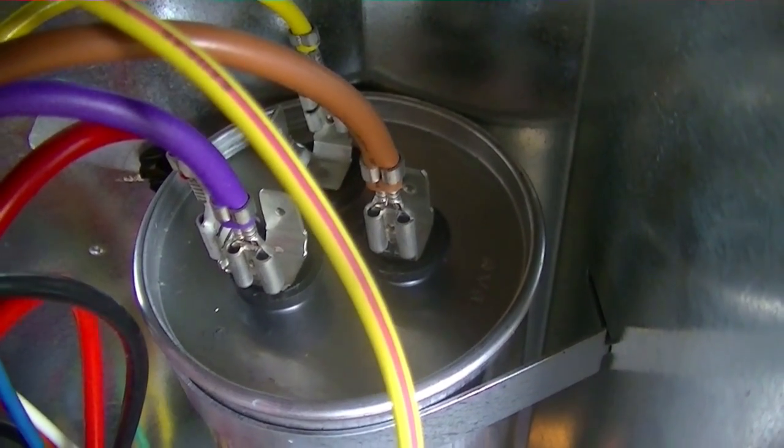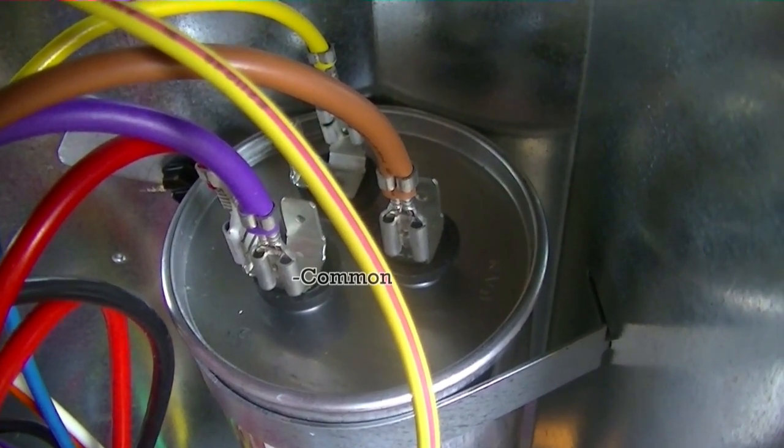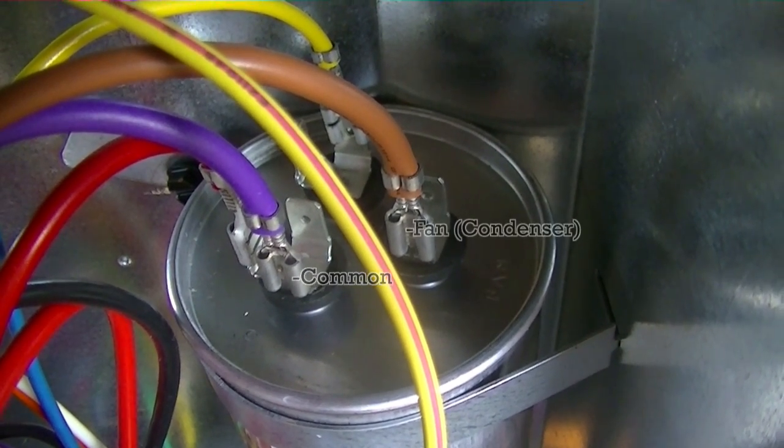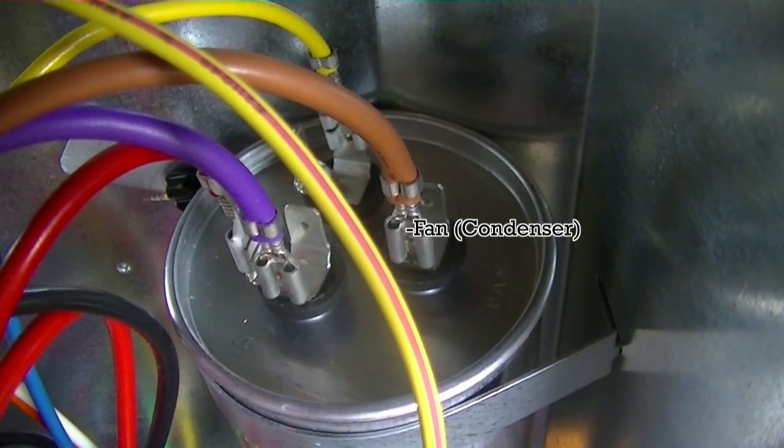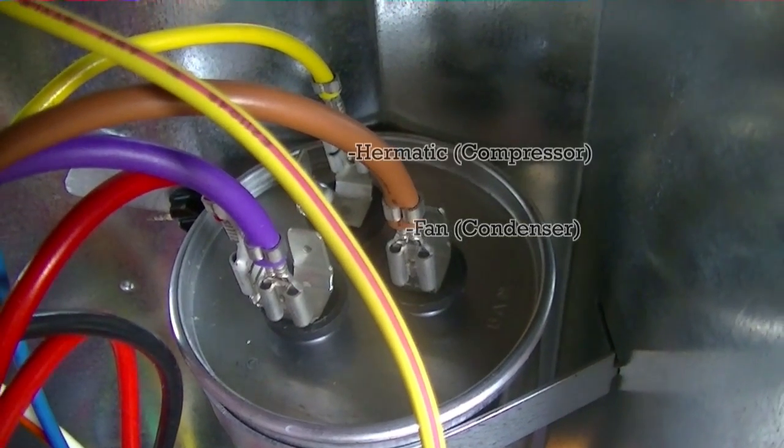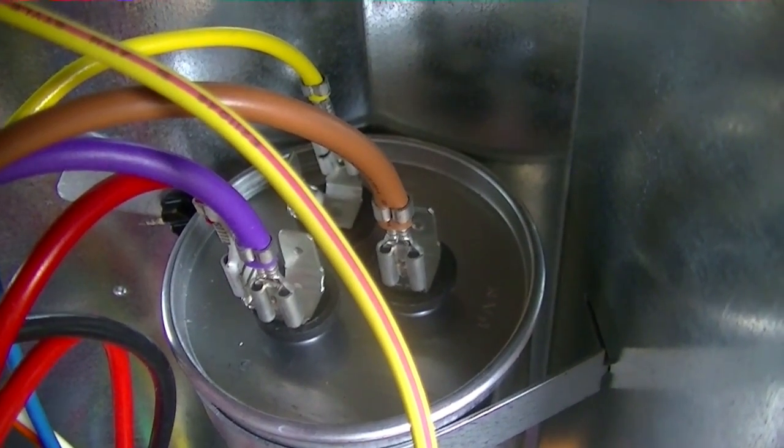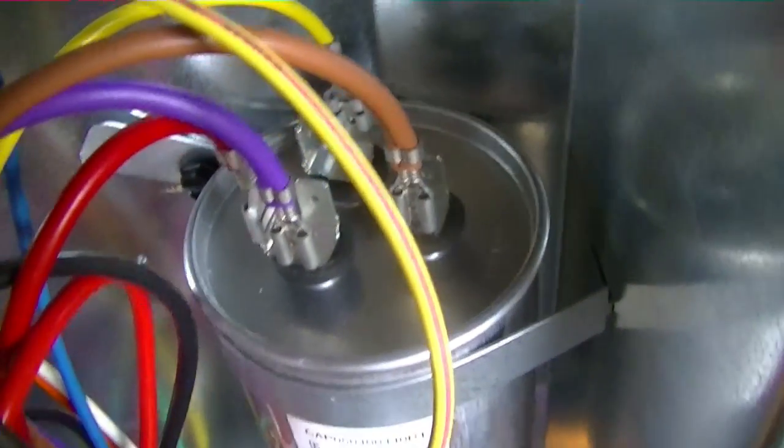Here we have our capacitor. We have the purple and red going to our common terminal. We have our brown going to our fan terminal, and our yellow going to our hermetic terminal. Hermetic is hermetic compressor, it just refers to the fact that it's hermetically sealed.